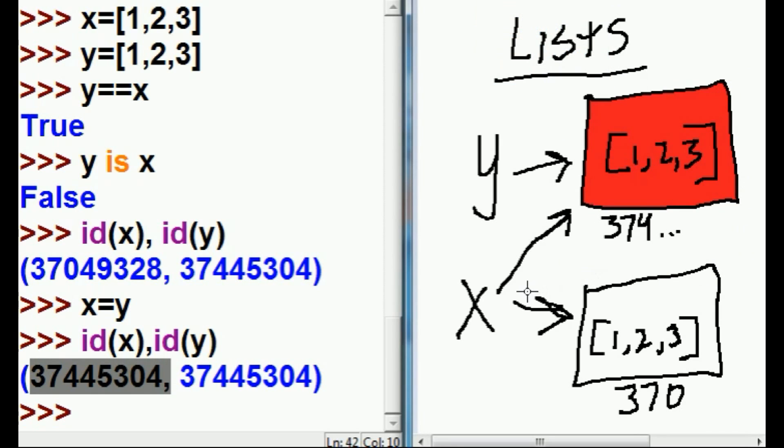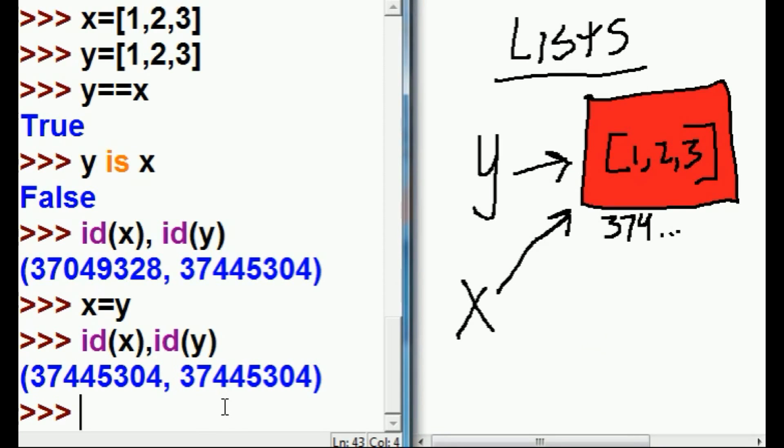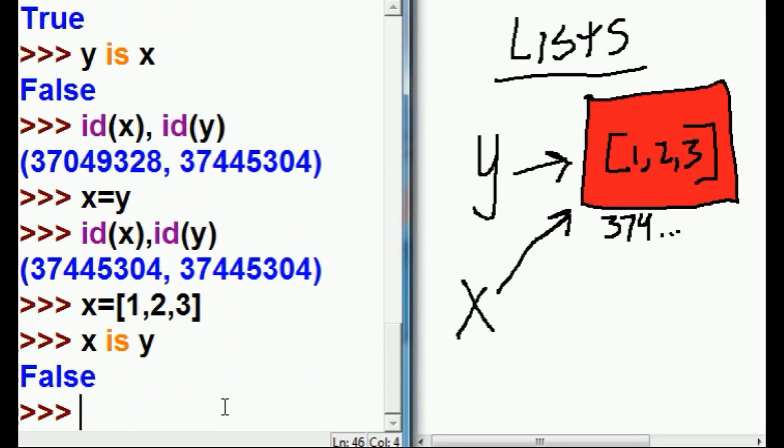But what about this guy over here? Garbage collection. He's no longer referencing any variable. Garbage collection. He's gone. Can I change that? Can I now key in x equals [1,2,3], same numbers? And hit enter. x is y. False.